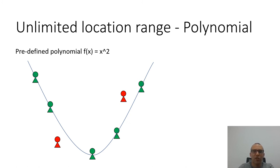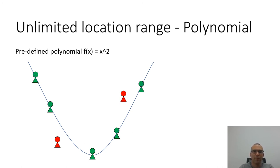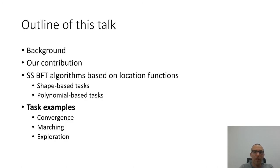As in the shape structure, the polynomial structure can run in polynomial time based on the efficient Berlekamp-Welch algorithm or its extension for three or more dimensions, to find at least n minus 2t robots located on the polynomial with degree at most n minus 2t minus 1. Let's now see several examples of tasks and how we can use the robots to execute them using the shape and polynomial-based algorithm despite the Byzantine robots.